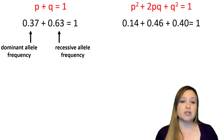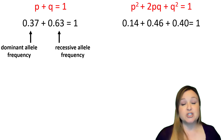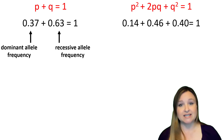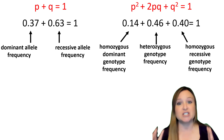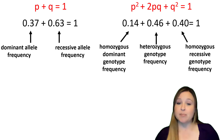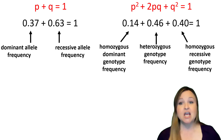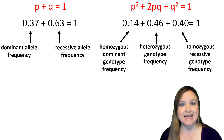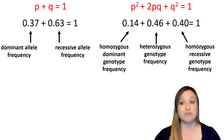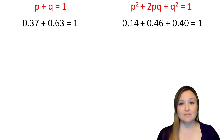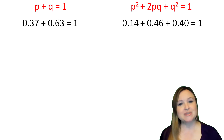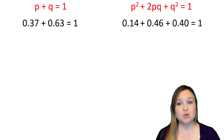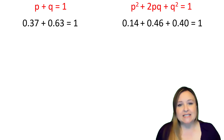The Hardy-Weinberg equation shows us the frequency of alleles P and Q, and the frequency of the different genotypes P², 2PQ, and Q². Let's take a look at how we might use this — we have our allele frequencies on the left and genotype frequencies on the right.